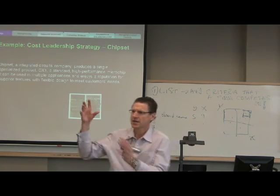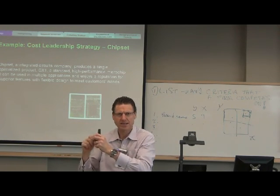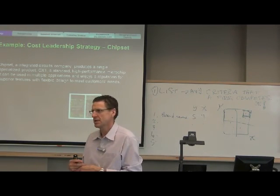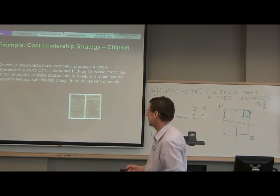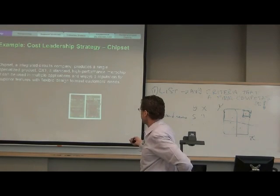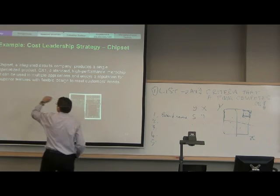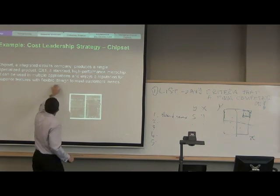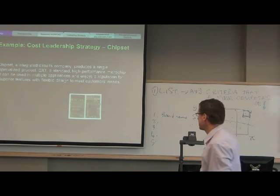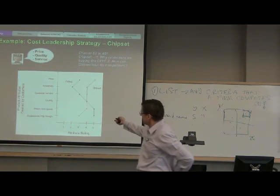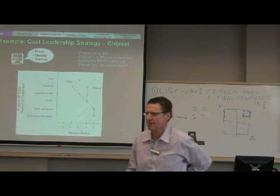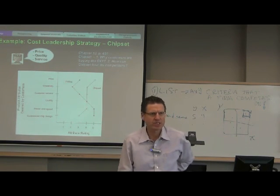Knowing that there's a connection gives the strategy part you do need to know its legitimacy — it's the reason why you need to know it. Here is what a customer preference map looks like. For example, Chipset — a single product, high-performance microchip used in multiple applications, with a reputation for superior features and flexible design to meet customer needs — is competing with Visilog. This is what you do if you're doing a strategic analysis of a company. Rather than words, words, words, do a customer preference map.